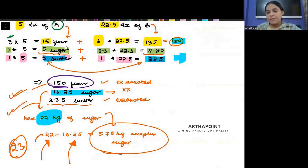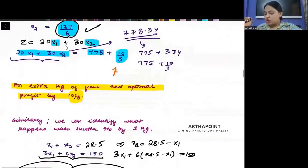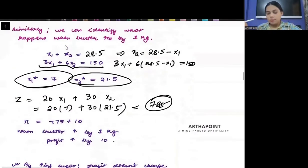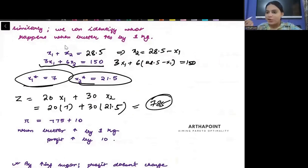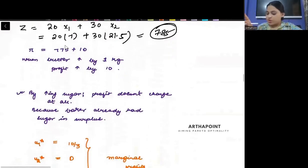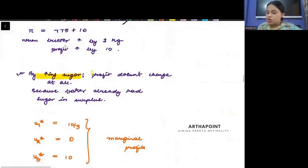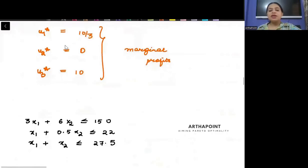If I change the amount of sugar, because sugar was already in excess, sugar was not completely utilized anyway, your profits will not change. This is what I have written here. By increasing sugar, profit does not change at all. Because baker already had sugar in surplus.